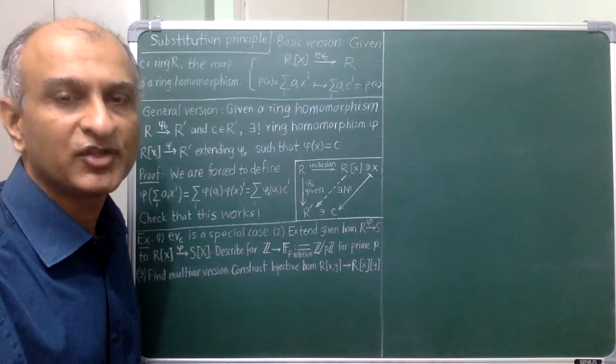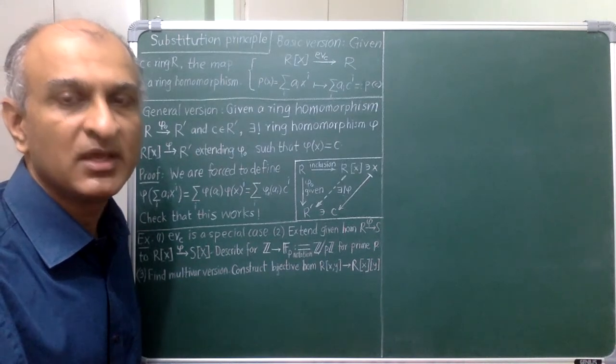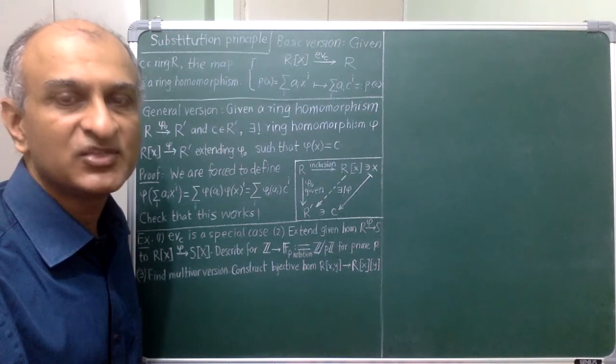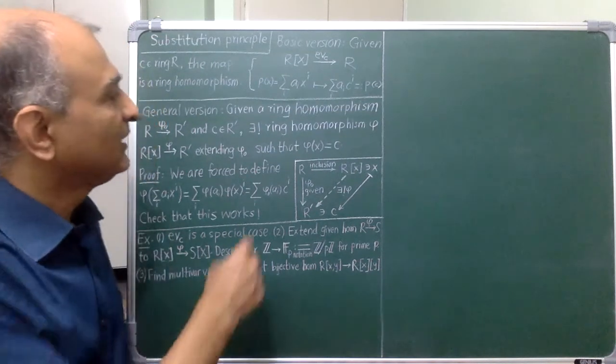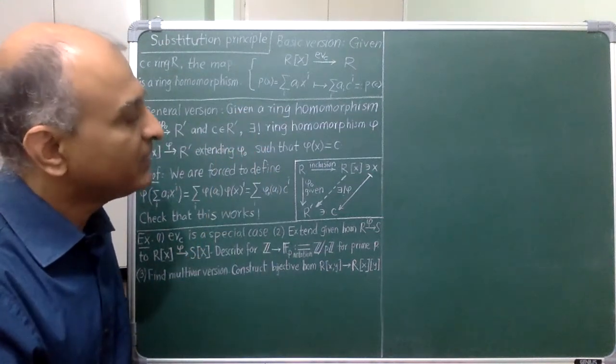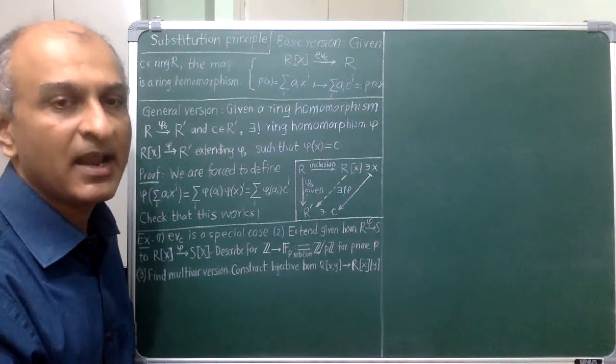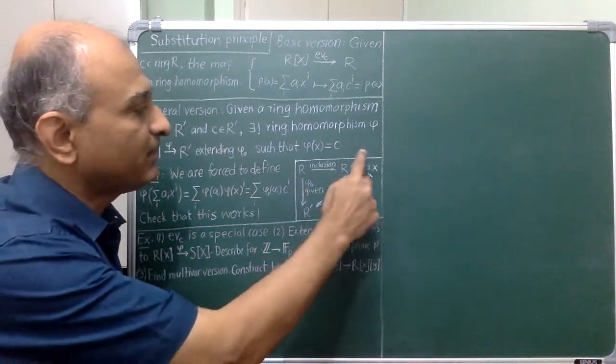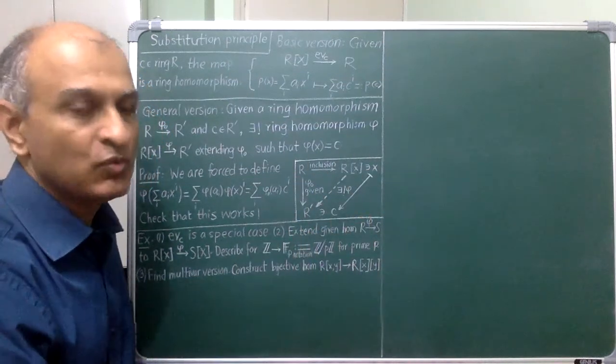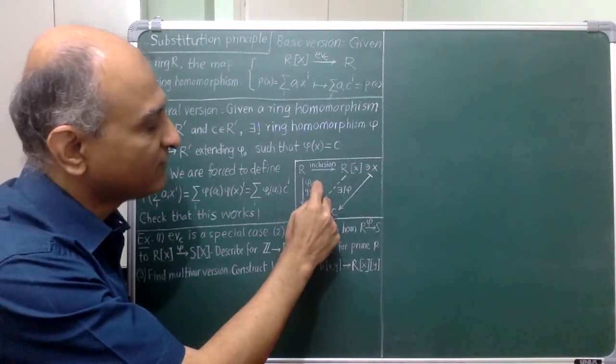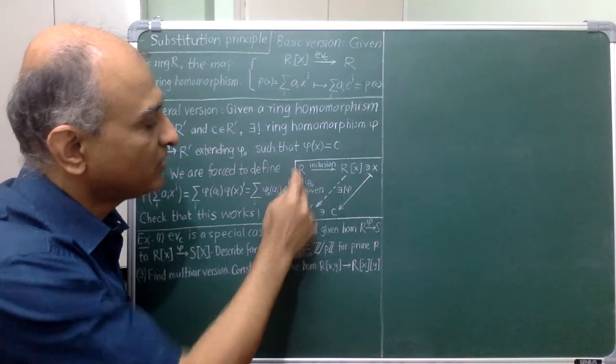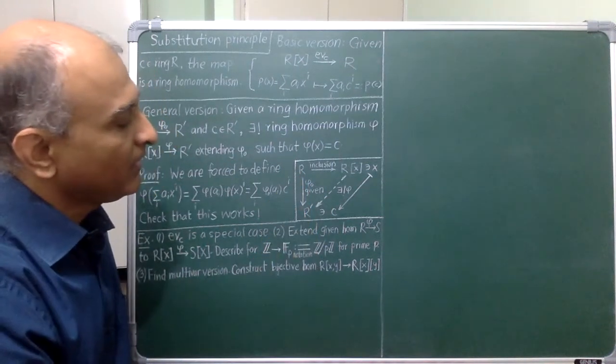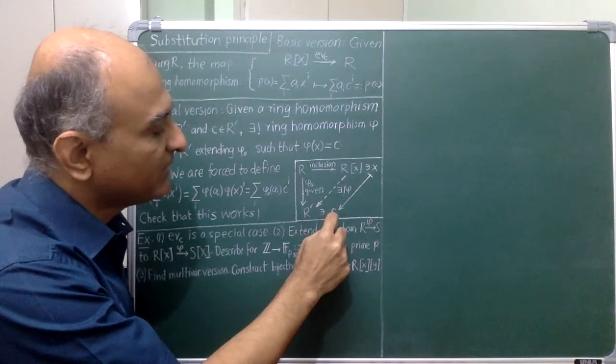You should be able to do the argument that I have erased on your own because it will be needed very soon to prove the general version of the substitution principle that I have written over here. It will be easier to understand this statement and to remember it using the picture here. We are given a homomorphism phi_0 from a ring R to a ring R' along with a special element in the target ring.